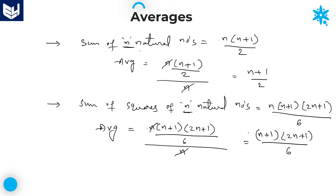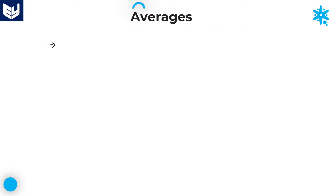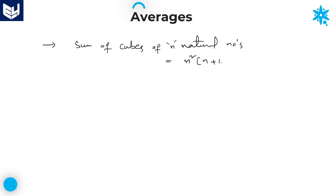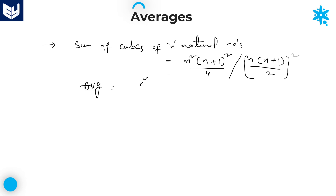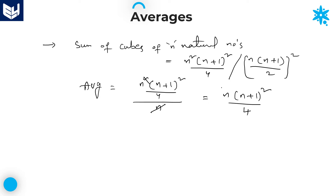The sum of cubes of n natural numbers = n²(n+1)²/4, which can also be written as [n(n+1)/2]². If you want to calculate the average, it equals n²(n+1)²/4 divided by n. This n cancels, so the required average is n(n+1)²/4.